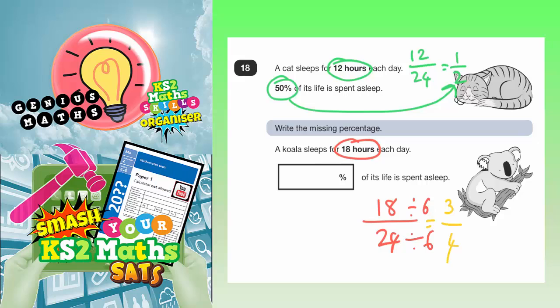Now, all we've got to do now is turn 3 quarters into a percentage. Well, don't forget, if you've got a chocolate bar split into half, that would be 50% each. But if you split each half in half again, that would be 25% in each quarter.